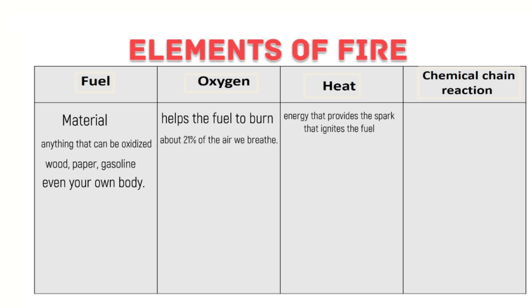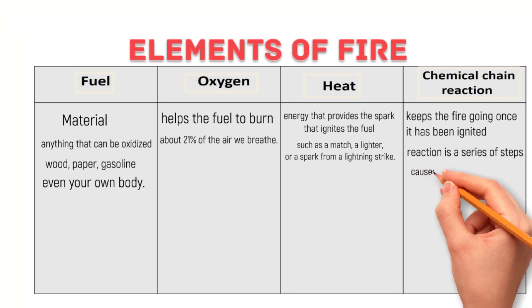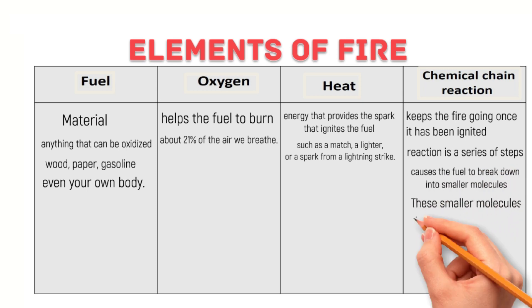The chemical chain reaction is the process that keeps the fire going once it has been ignited. This reaction is a series of steps in which the heat from the fire causes the fuel to break down into smaller molecules. These smaller molecules then react with the oxygen, releasing more heat and keeping the fire going.